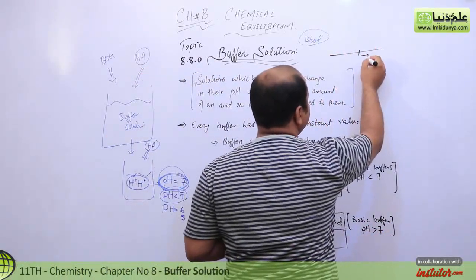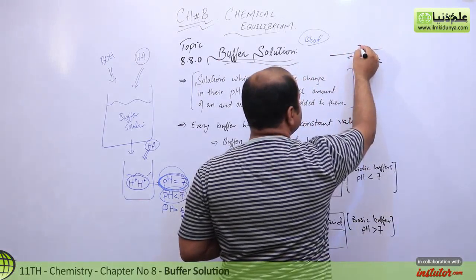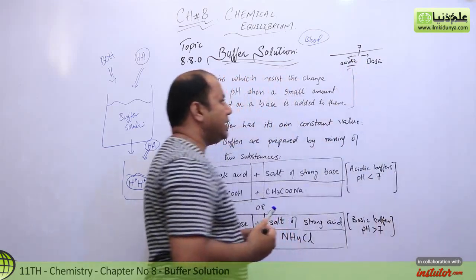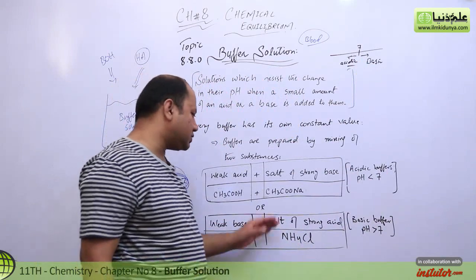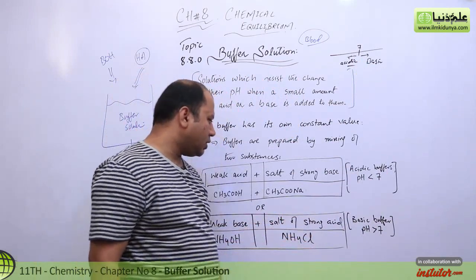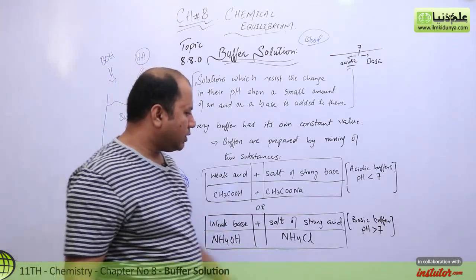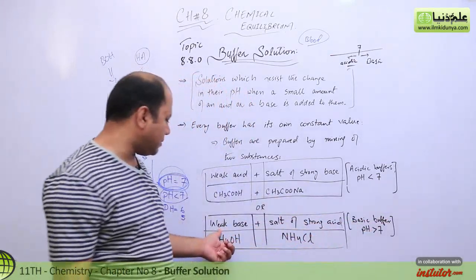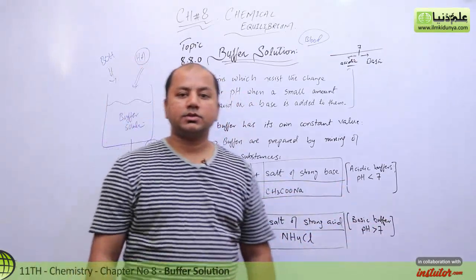Aap pH scale ke andar - value agar 7 se aage jati hai toh we are talking about basic character aur value agar 7 se niche aati hai toh we are talking about acidic character. So that's the idea. Yahan pe aap ka weak base hamara NH4OH hai aur salt of a strong acid hai NH4Cl. So that is what we have in the end. Yahan pe aapka basic buffer kahenge. Basic buffer aap banayenge jab weak base se banayenge. Acidic buffer aap banayenge jab weak acid se banayenge.